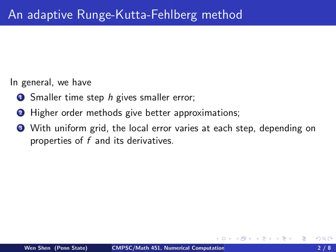Let's look at some general observations for these methods. First, if we take smaller time steps h, this gives us a smaller error. Second, high-order methods give better approximations, meaning smaller errors and closer to the exact answer. Third, if we use uniform grids where the step size is the same at every step, the local error varies at every time step because the error also depends on the properties of f and its derivatives.